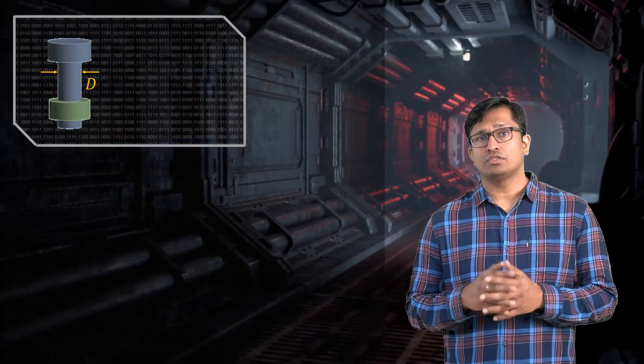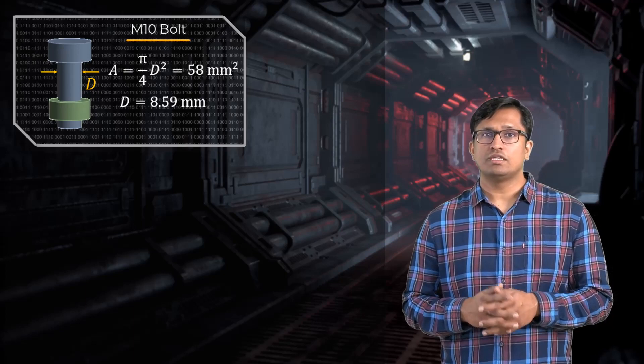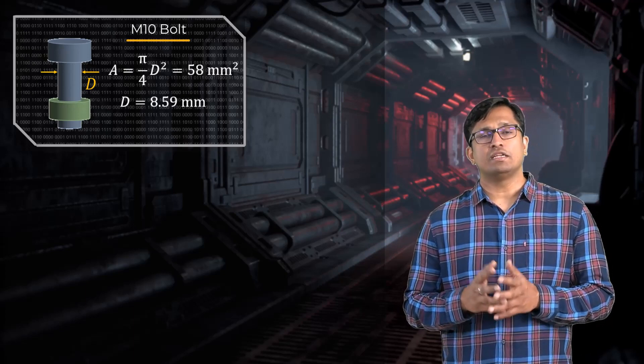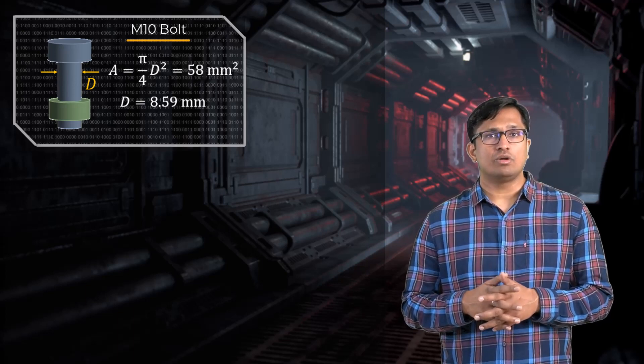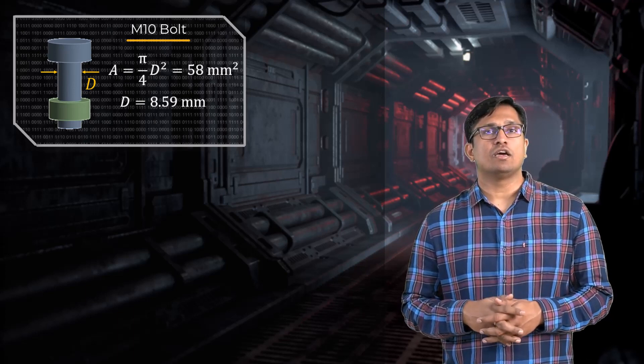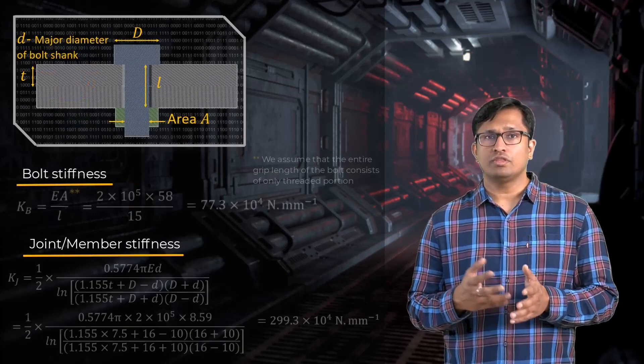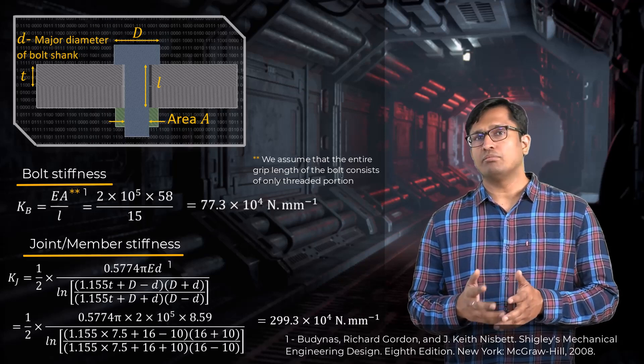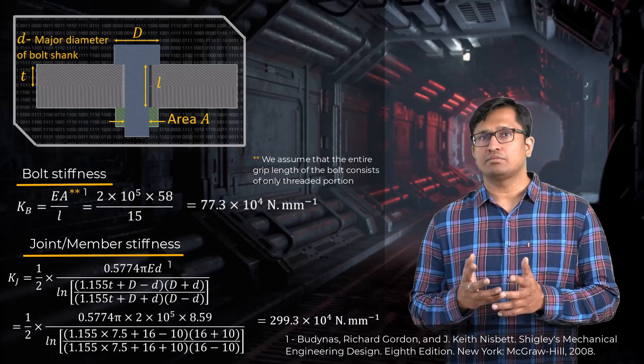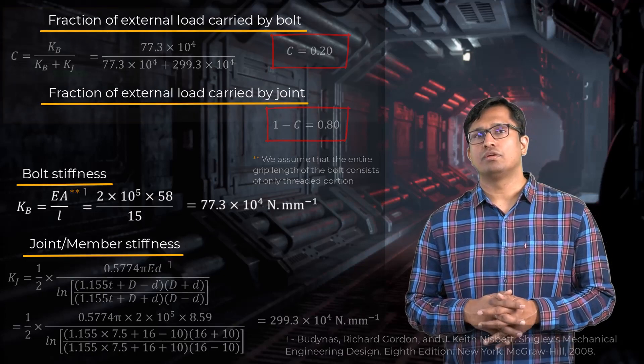Given our choice of an M10 bolt, the bolt geometry in our model is represented by a cylindrical diameter such that its cross-sectional area is equal to the tensile stress area of an M10 bolt. From that information along with the thickness of the members, we can calculate the bolt and member stiffnesses and expected portion of the external load carried by the bolt.